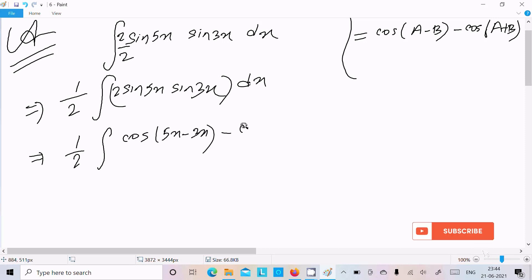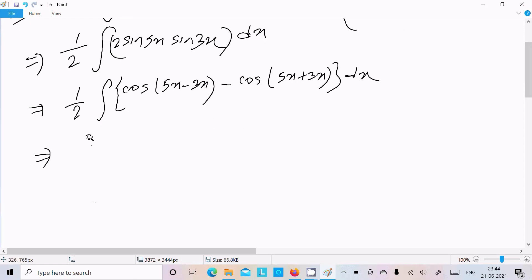Minus cos A plus B, 5x plus 3x. Next, we can write 1/2 integration symbol, cos(5x - 3x), that is cos 2x minus cos 8x, dx.